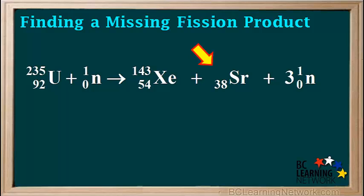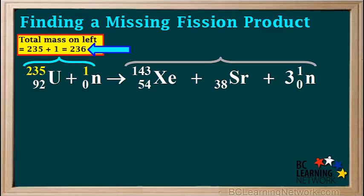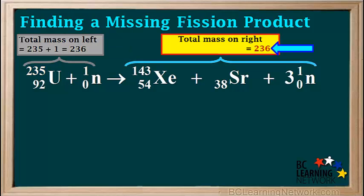In order to find the mass number of this isotope, we use conservation of mass. The total mass on the left is 235 plus 1, which is 236. So the total mass on the right side must also be equal to 236. The mass of the xenon is 143, and the total mass of 3 neutrons is 3 times 1, which equals 3. So far the mass on the right side of this expression is 143 plus 3, which equals 146. So this means the mass of the strontium must be 236 minus 146, which is equal to 90.